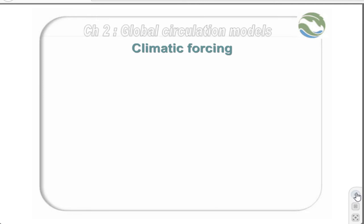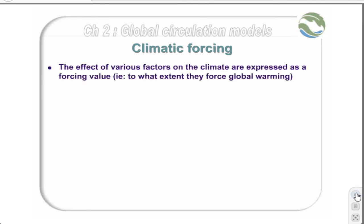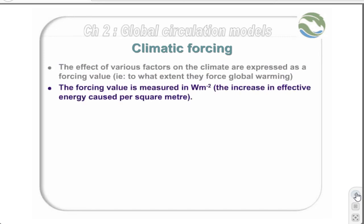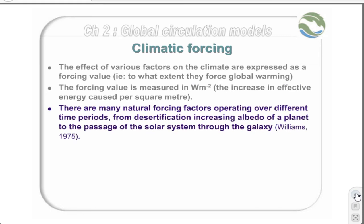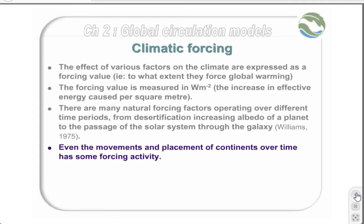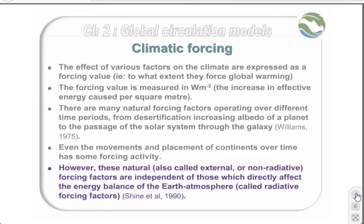The effect of various factors on the climate are expressed as a forcing value — in other words, to what extent they force global warming. A forcing value is expressed in watts per square meter, the increase in effect of energy caused per square meter. There are many natural forcing factors operating over different time periods, from desertification increasing the albedo of a planet, to the passage of the solar system through the galaxy. Even the movements and placement of continents over time has some forcing activity. However, these natural — also called external or non-radiative — forcing factors are independent of those which directly affect the energy balance of the earth-atmosphere system. These are called radiative forcing factors.